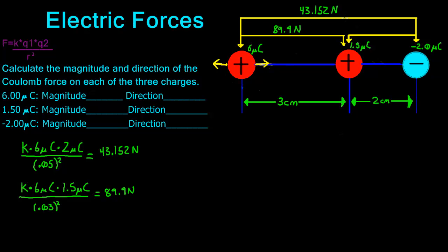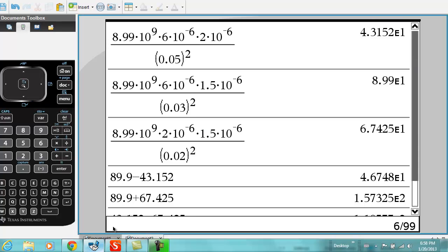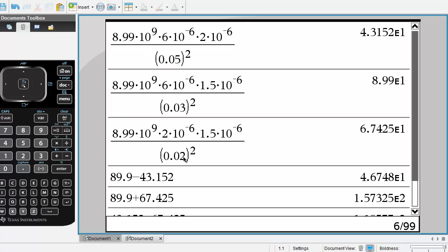That gives us 89.9 Newtons. I use these top brackets just to try to organize and show all the forces, their magnitudes, and what's going on. Now, first I want to find the magnitude between the 1.5 microcoulomb charge and the negative 2 microcoulomb charge. So we do K times 1.5 microcoulombs times 2 microcoulombs, divided by the distance — in this case 2 centimeters or 0.02 meters squared — and that gives us 67.425 Newtons.